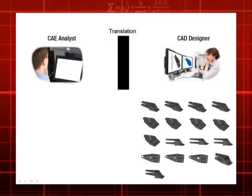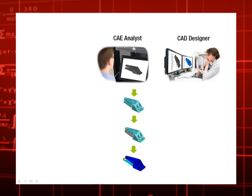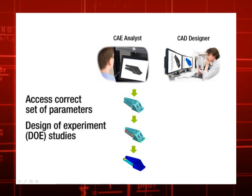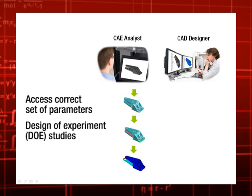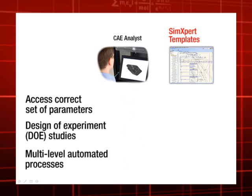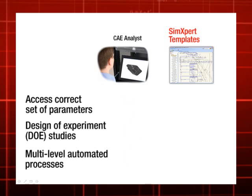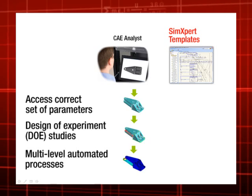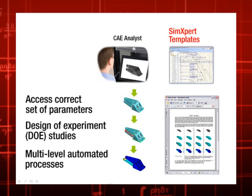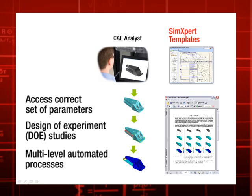Now the analyst is equipped with the ability to crank out CAD-based iterations faster and obtain his desired result a lot faster. By accessing the correct set of parameters, the CAE analyst can perform design of experiment studies. Combining this capability with SimExpert templates, our CAE analyst can also automatically run multi-level automated processes that can perform extensive DOE runs on the actual CAD model parameters and get the right design quicker. By leveraging templates that generate results and reports, our user can generate informative reports of the DOE, optimization, or robust analysis runs, making his study even more comprehensive.